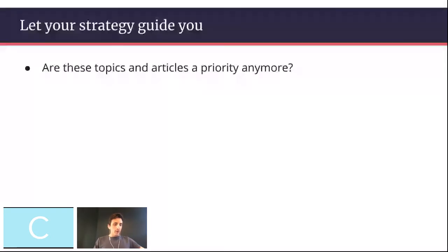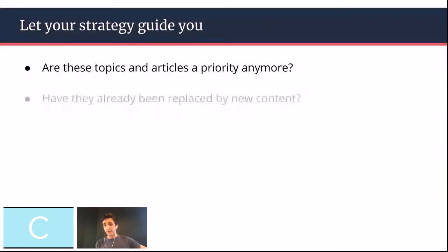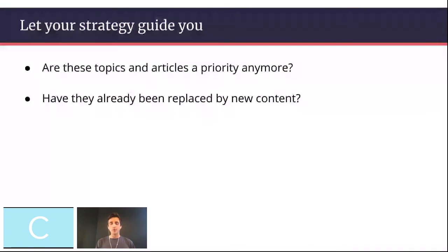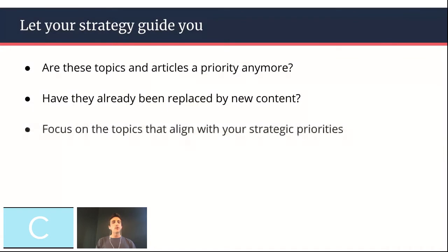Most importantly, let your strategy guide you. When you're going through your content audit, ask yourself if these topics and articles are actually a priority anymore — do they fit with your strategy right now? Has the content been replaced by newer content? If that is the case, you can use that old content to make the new content better using 301 redirects to make Google happy. And typically focus on the topics that align with your strategic priorities. So if you're going after a specific market or looking to move up-market, or there's a particular segment you're really trying to engage with, focus in on those.